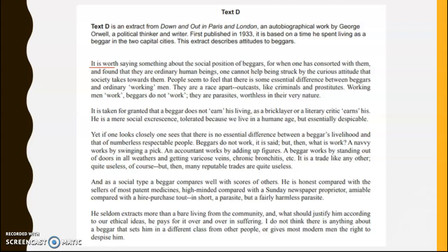Orwell starts with 'It is worth,' justifying his context, then 'It is taken for granted' — he challenges society's ideas. Notice the simplicity of style and discourse structure. Notice the non-standard opening 'And as a social type' — opening with the coordinating conjunction 'and.' Previously that would be seen as non-standard. Here Orwell does it as part of his discourse structure, showing a general continuation of thought. We get the simplicity: 'He is honest,' 'He seldom extracts more.'